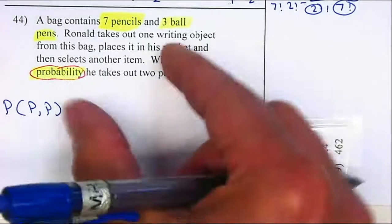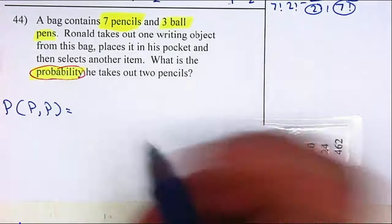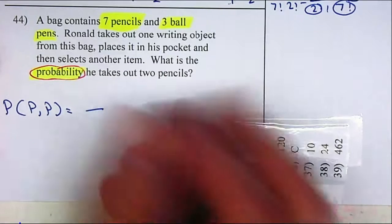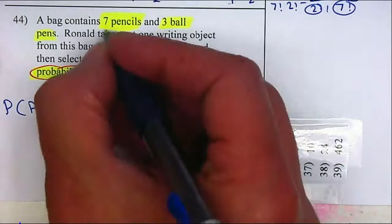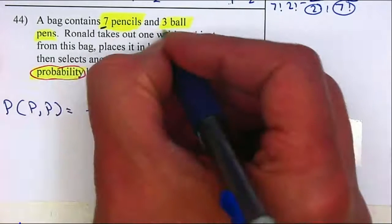So we're going in there and what's the probability that he selects the first pencil? How many pencils are available? Seven. And how many writing objects total? Ten.